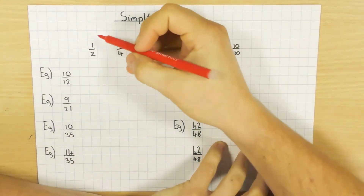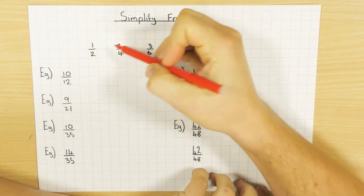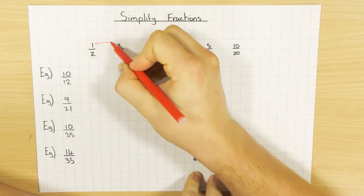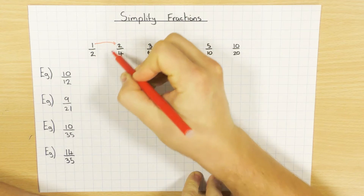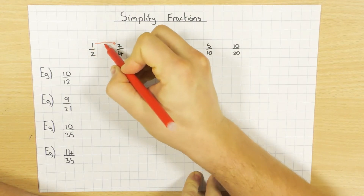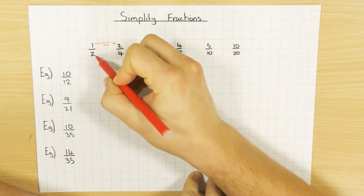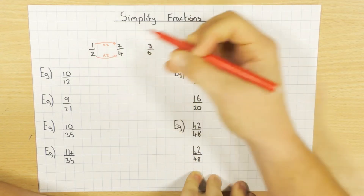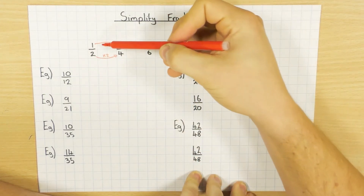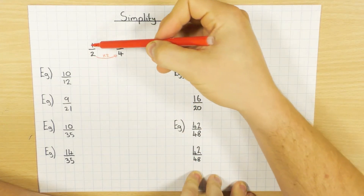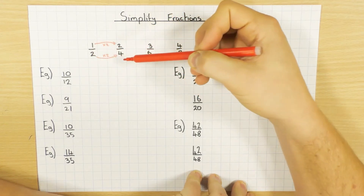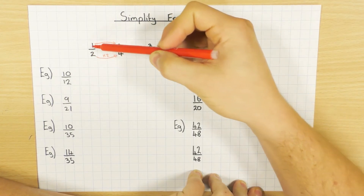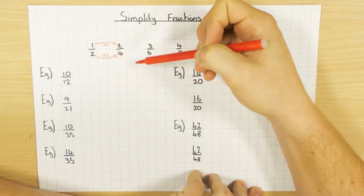If we have a look at a half here and two quarters here — how do I get from one to two? I times by two. And how do I get from two to four? Again, I times by two. So when I say they're equivalent and exactly the same, it's because if I times the top and the bottom by exactly the same number — in this case times by two — I get an equivalent fraction.